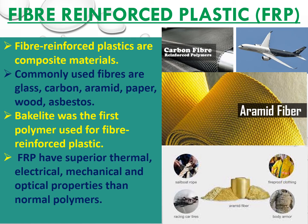We can add different types of fibers like glass, carbon, aramid, paper, wood, and asbestos. The first polymer used in fiber reinforcement was Bakelite — additives were added to strengthen it. Fiber reinforced plastics have superior thermal, electrical, mechanical, and optical properties compared to normal polymers.